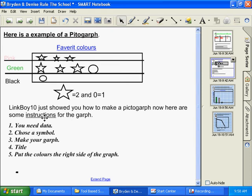For example, one star equals two, and one circle is one.